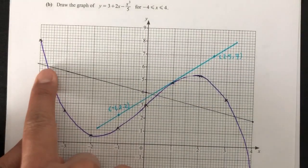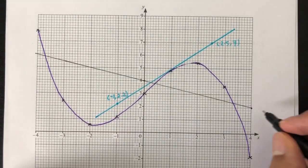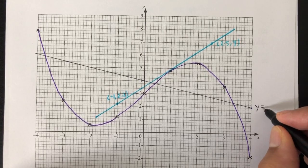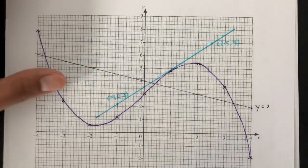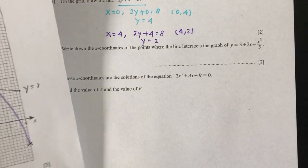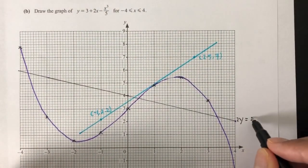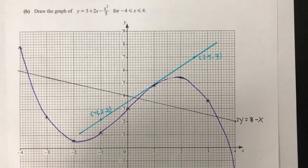Now always label your lines. That is equal to 2y plus x equal to 8. So 2y equal to 8 minus x. Same thing.